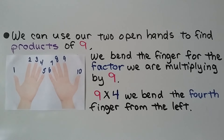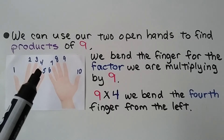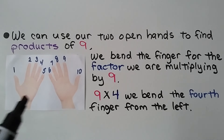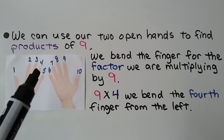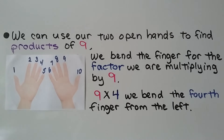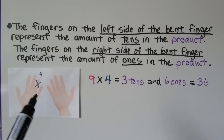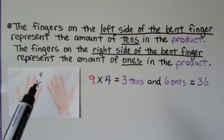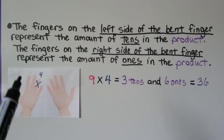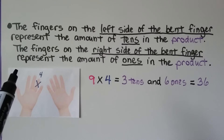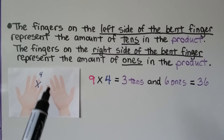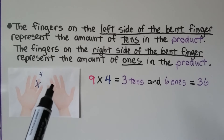We can use our two open hands to find products of 9. We bend the finger for the factor we are multiplying by 9. For 9 times 4, we bend the 4th finger from the left, counting 1, 2, 3, 4. Once that finger is bent, the fingers on the left represent the tens in the product, and the fingers on the right represent the ones.